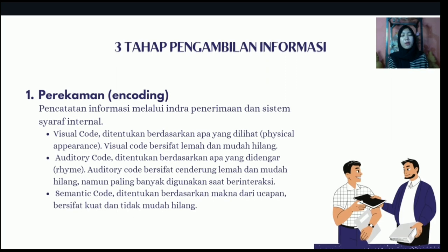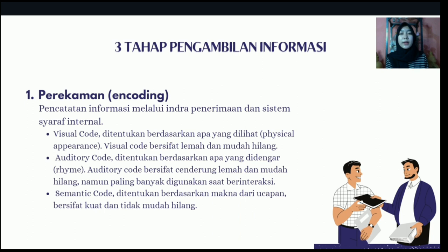There are three stages of information collection. The first is encoding — the recording of information through the sense of reception and the internal nervous system. Information recording can be categorized into three main things. Visual code is determined based on what is in physical appearance. Visual code is weak and easily lost.